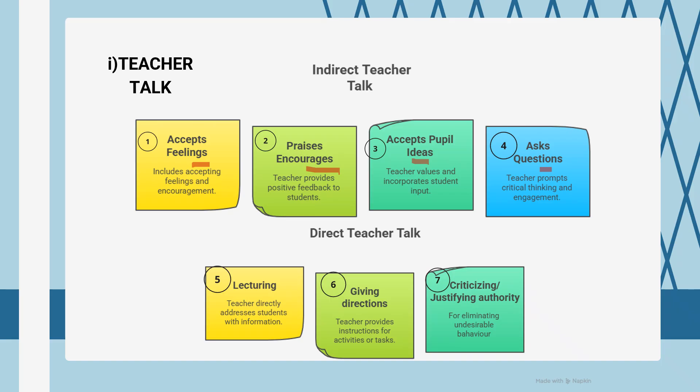In direct teacher talk, it is more teacher-centric. The teacher gives lectures and directions like 'look at the board' or 'follow me,' along with commands. Then there is criticizing or justifying authority — for example, saying 'that's not the correct answer, you need to learn how to do it correctly.' All of that comes under criticizing or justifying authority, and categories 5, 6, and 7 come under direct teacher talk.